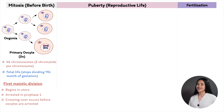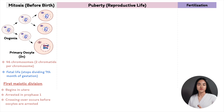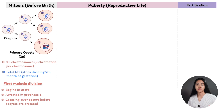Oogenesis now enters the growth stage, a very long process during which primary oocytes increase in size. At birth, the ovaries contain about two to four million eggs. During childhood, atresia — programmed cell death — occurs, leaving roughly 400,000 eggs at puberty. Of those, only about 400 will actually be ovulated during the active reproductive years.